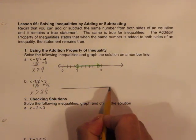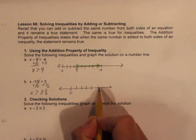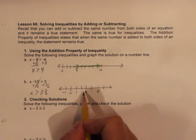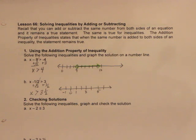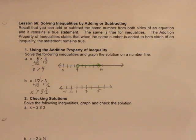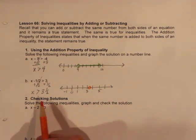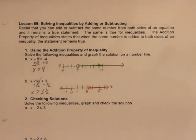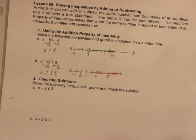I'll draw a number line: negative 1, 0, 1, 2, 3, 4, 5. I don't have an equal sign — just greater than — so it's going to be an open circle at 3 and a half, right in between 3 and 4. My pencil broke so I'll use orange instead. x is any value greater than 3 and a half, so the arrow goes right.